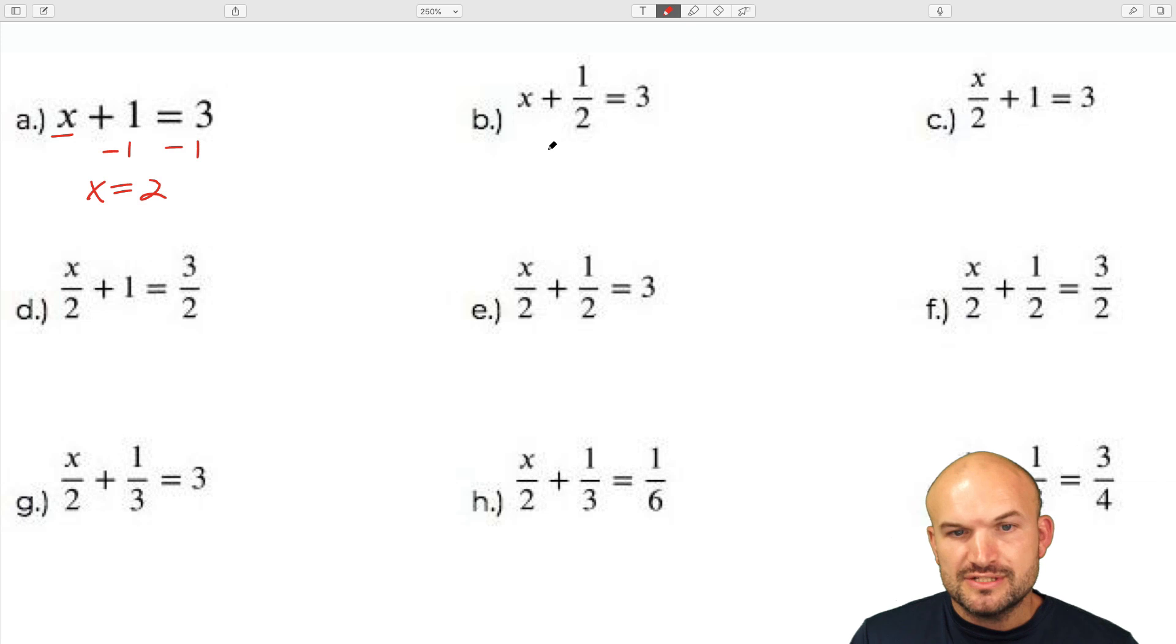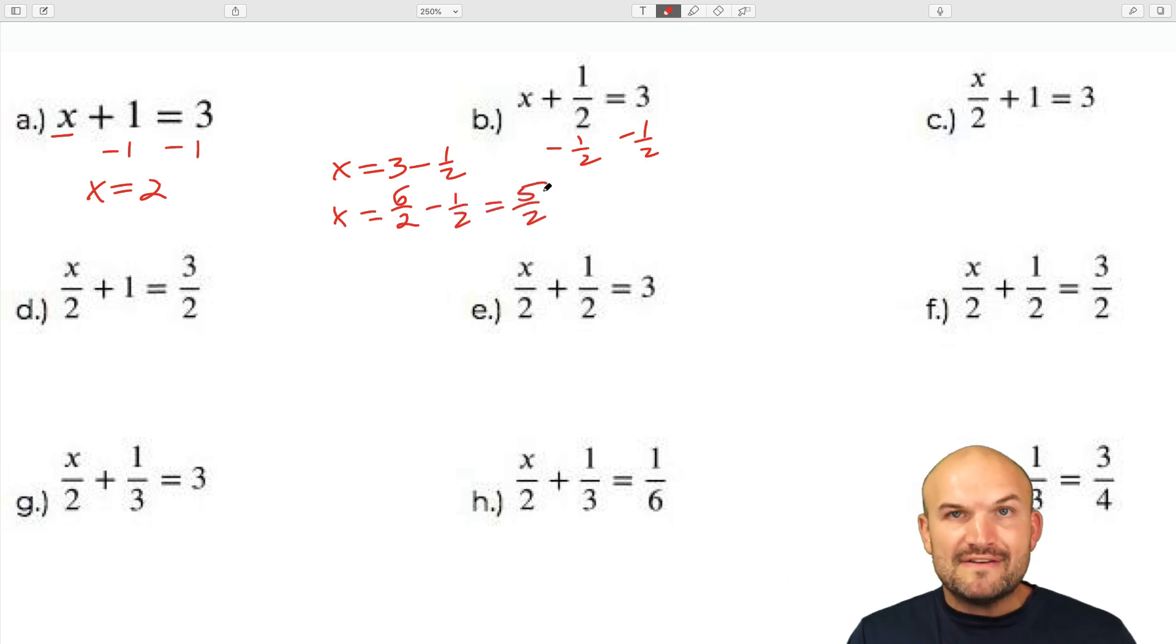So if I was going to use my inverse operations, what I would do is subtract 1 half on both sides. That's what we did over here. So therefore, I'd have x equals 3 minus 1 half. And here's where a lot of students make their mistakes. Either they have no idea how to subtract 3 minus 1 half, or they're just going to make a mistake with fractions. So the key here is remember to write your integer as a fraction with the same denominator as 2. So therefore, 3 can be written as 6 halves minus 1 half. And therefore, my final answer is 5 halves.